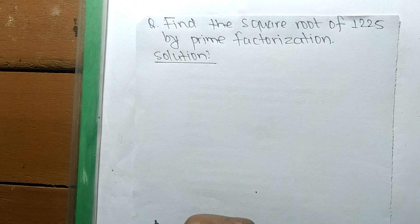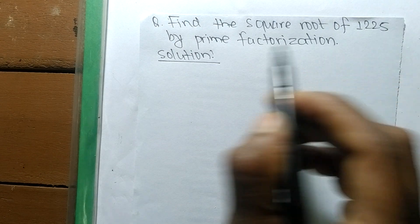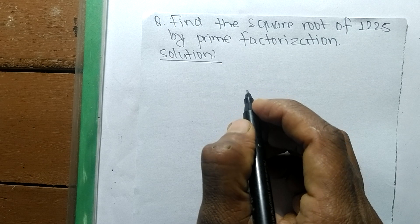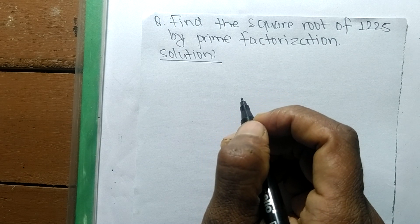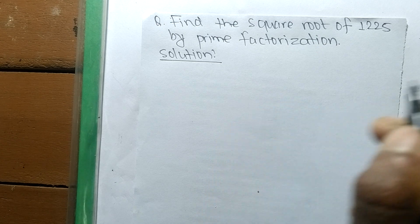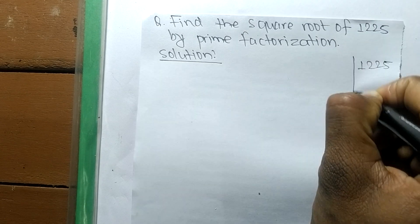So today in this video we shall learn to find the square root of 1225 by prime factorization method. To find out a square root by prime factorization method, first we have to find the prime factors of the given number. So the given number is 1225.